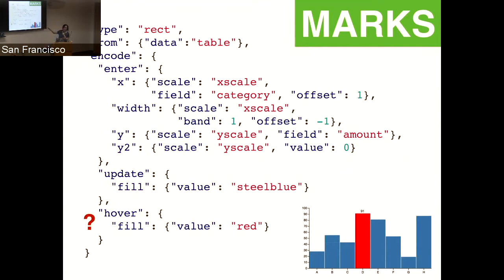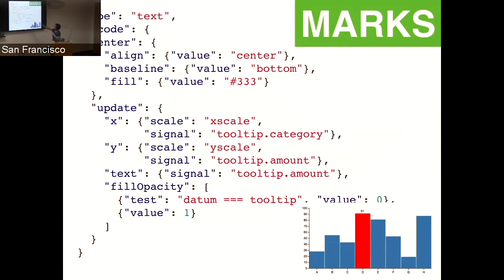We can see that this piece of text is actually listening to a signal — that's the reactivity tying different pieces together. This 'tooltip.amount' value flows through the signal processing. Although this feels verbose for just specifying a bar chart, the Vega team has released a domain-specific language called Vega-Lite that lets you specify a bar chart much more succinctly.